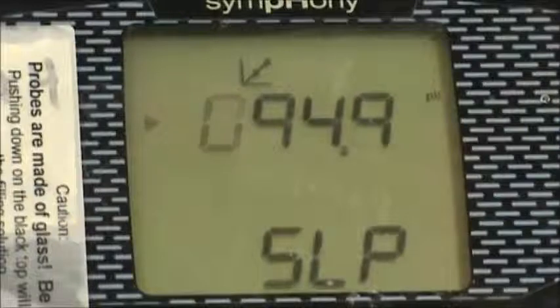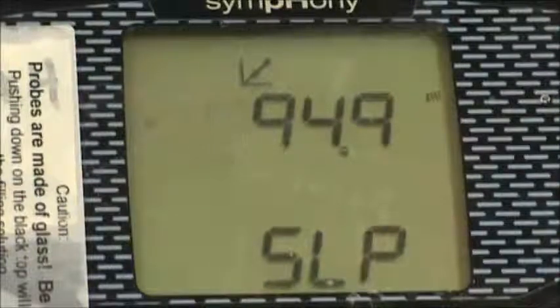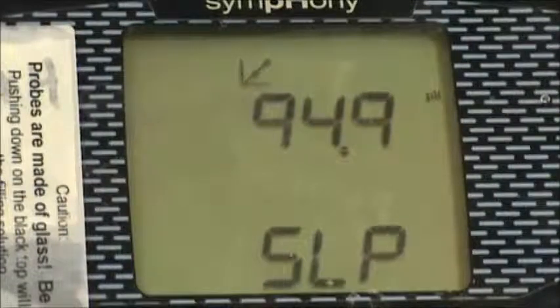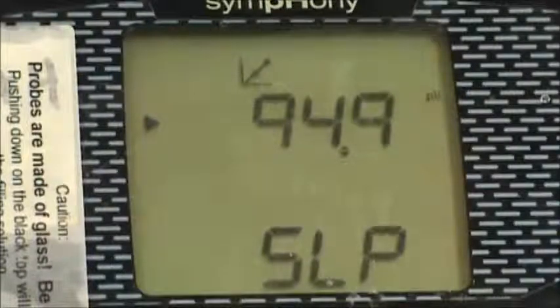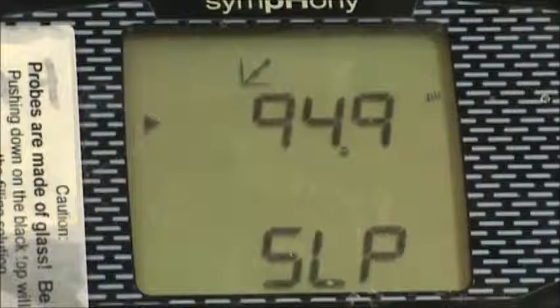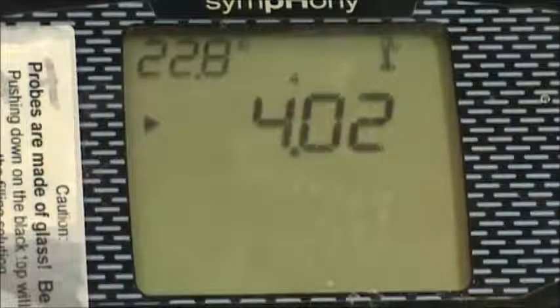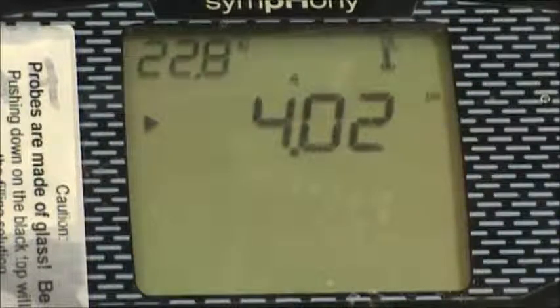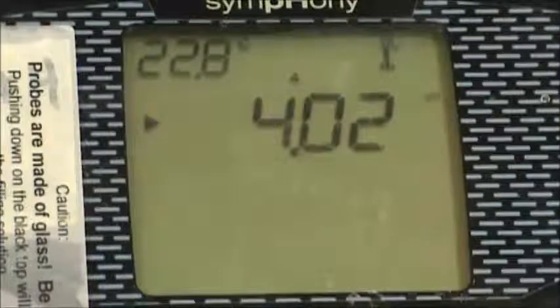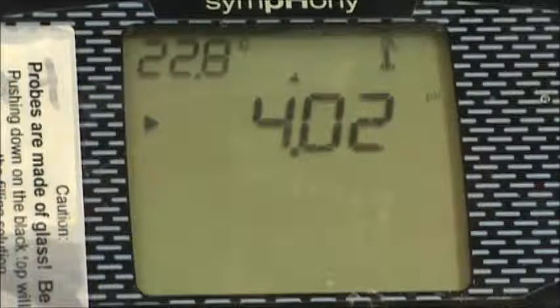The screen should change to read SLP at the bottom. Press measure a second time, and the screen should revert back to showing the correct pH measurement. The value of the buffer solution should also be shown above the pH reading on the screen, and the measurement icon should be shown in the upper right-hand corner.